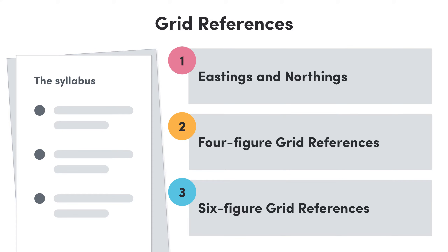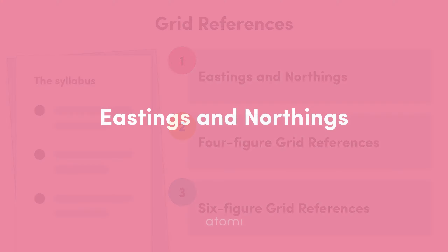Hi there, today we're going to look at grid references, which are used to find exact locations on many maps. Firstly we'll explain some map terminology: Eastings and Northings. Then we will explore how we read and use four figure grid references. Finally we'll look at six figure grid references, which are used to be a bit more precise or when working with maps that have large scales. So let's get going.